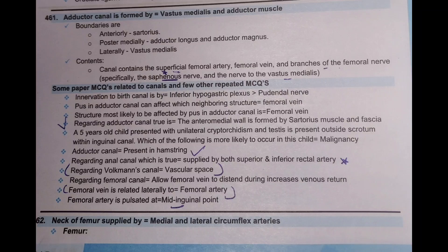A 5-year-old child presents with unilateral cryptorchidism; the testis is present outside the scrotum within the inguinal canal. Which of the following is most likely to occur in this child? The answer is malignancy.